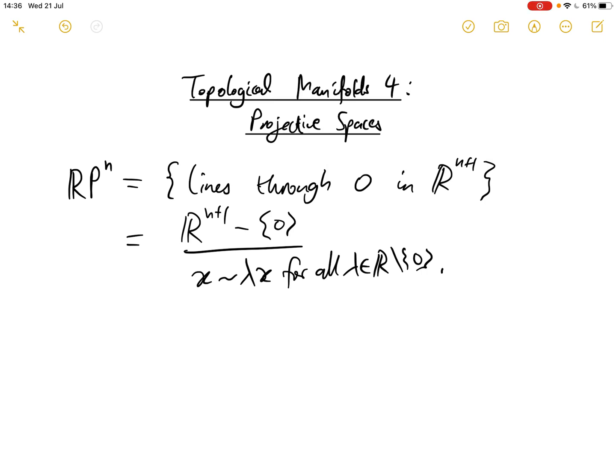And this isn't the only way to think about RPn. We can also think about it as the n-sphere modulo the equivalence relation that glues together antipodal points. So x and minus x for each x in Sn. If we glue those together, we also get RPn.